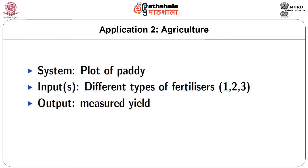The second application comes from the completely different world of agriculture. In this case, our system is a plot of paddy and we are interested in studying the effect of different types of fertilizers on the yield of paddy. We have a single input — fertilizer — with three different types: 1, 2, and 3. It is important to understand that though we work with three types of fertilizers, the number of inputs is just 1. The values 1, 2, 3 refer to the levels, and the number 3 should never be interpreted as the number of inputs.